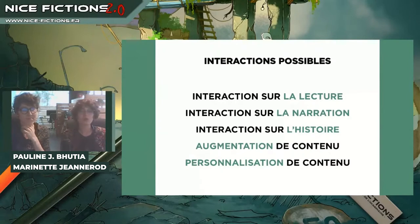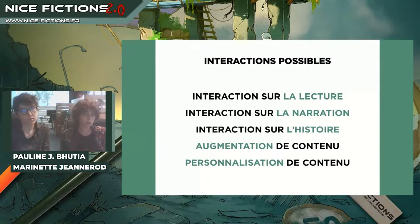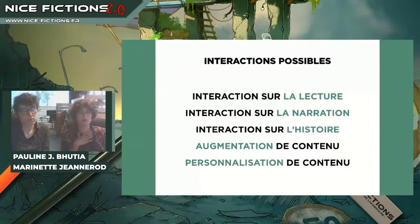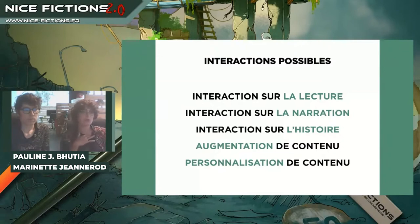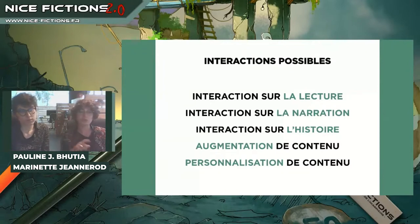Il y a aussi l'interaction sur l'histoire. L'histoire regroupe les faits à partir desquels se construit le récit. L'interaction sur l'histoire, ce serait décider des faits et faire évoluer l'histoire à partir de nos choix. Tantal de Gilles Porte en est un exemple : on est placé à la place du président de la République et on doit négocier la tenue des JO à Paris. Selon nos choix, le spectateur va réussir ou non la mission. Extraordinaire se place ici dans l'interaction sur l'histoire parce que le spectateur décide des choix à la place du personnage principal, et fait évoluer l'histoire à partir de ces choix, tout comme Tantal, partageant aussi la structure en ramification.